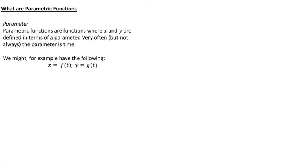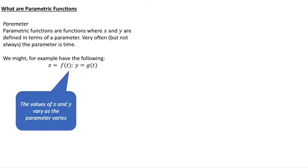So we might for example have a situation where x is defined as f(t) and y is defined as g(t). So f and g are separate functions. One of them gives us our y value and one of them gives us our x value. And so the values of x and y vary as the parameter t varies.